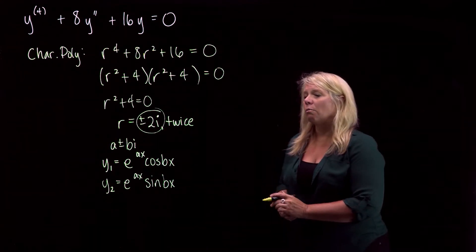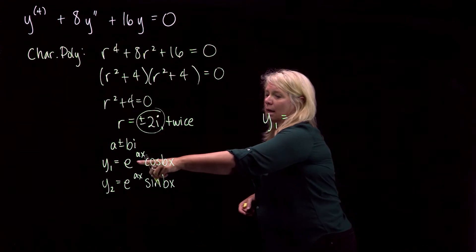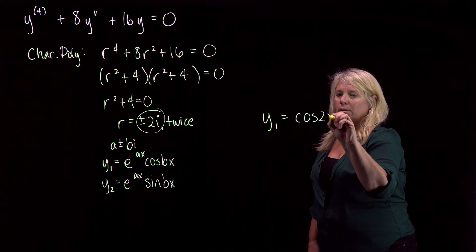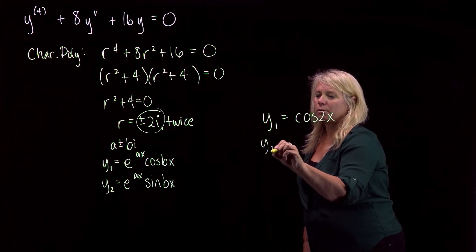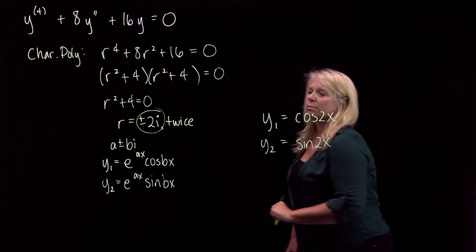So we'll get y1 is e to the zero x, I don't need to write that, cosine two x. And y2, sine two x, using these forms here.